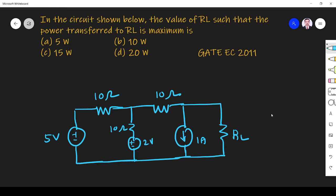The question is: in the circuit shown below, the value of RL such that the power transferred to RL is maximum. So we need to find RL at that value the maximum power is transferred.